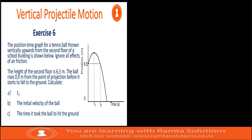The height of the second floor is 6.5 meters. The ball rises 0.9 meters from the point of projection before it starts to fall to the ground. I want you to realize that they gave us the distance from when the object was released to when it reached maximum height — that is 0.9 meters.